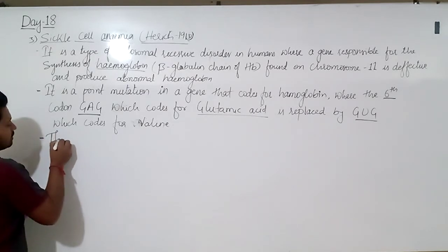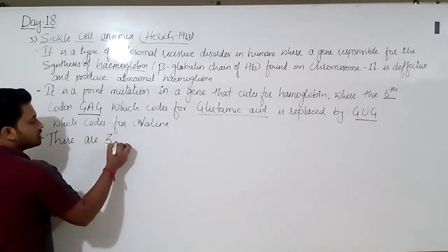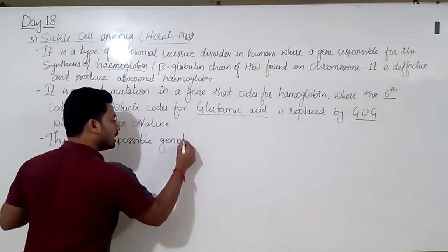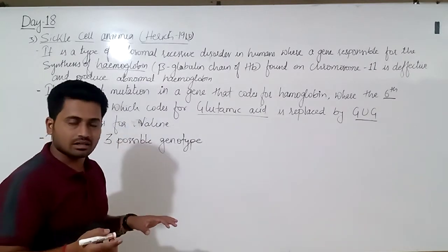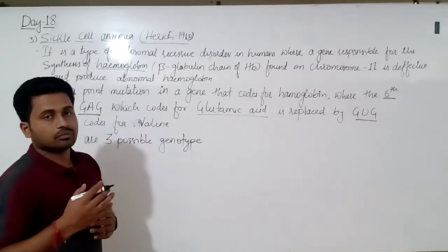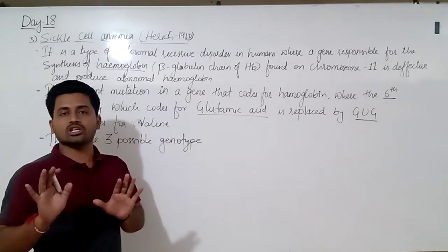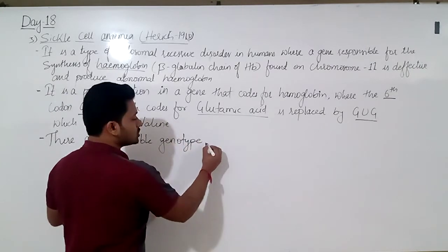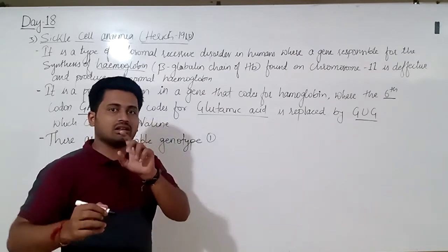There are three possible genotypes in individuals for this disorder. These are: homozygous dominant, heterozygous, and homozygous recessive.